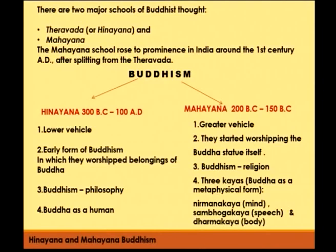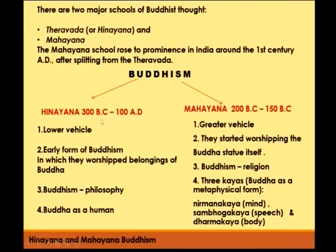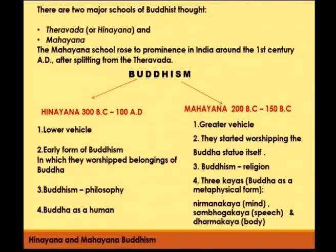There are two schools of thought in Buddhism: Hinayana and Mahayana. Hinayana, also known as the lower or modest vehicle, existed between 300 to 100 BC. It is a more modest form of Buddhism in which they considered Buddha more as a human being than a god. They worshipped just the belongings of Buddha rather than Buddha himself, and Buddhism was considered more as a philosophy rather than a religion.